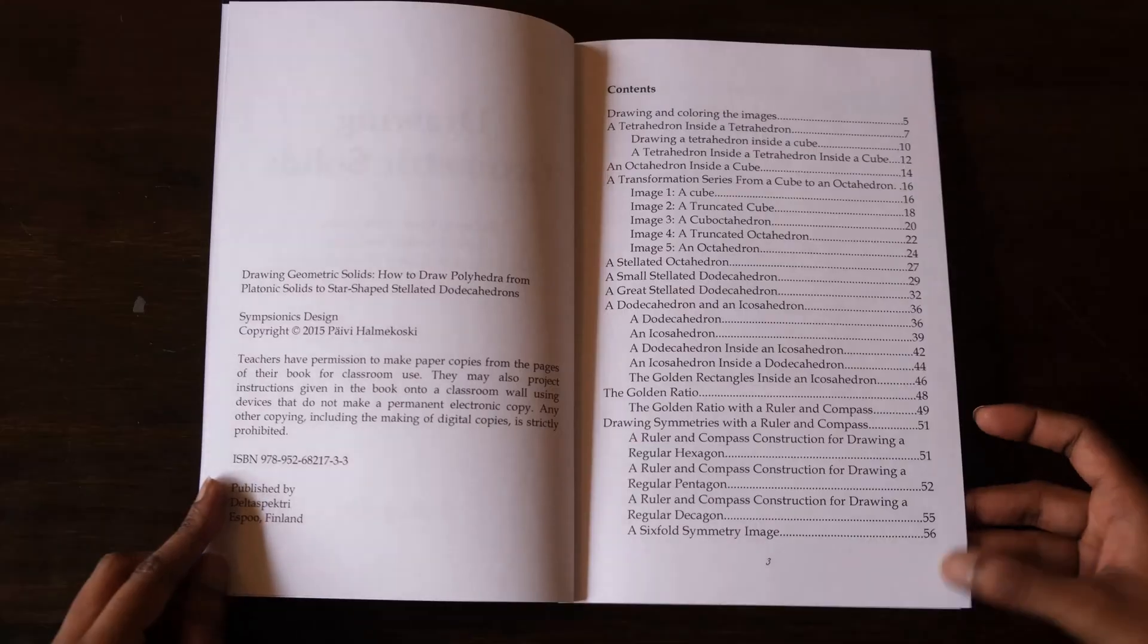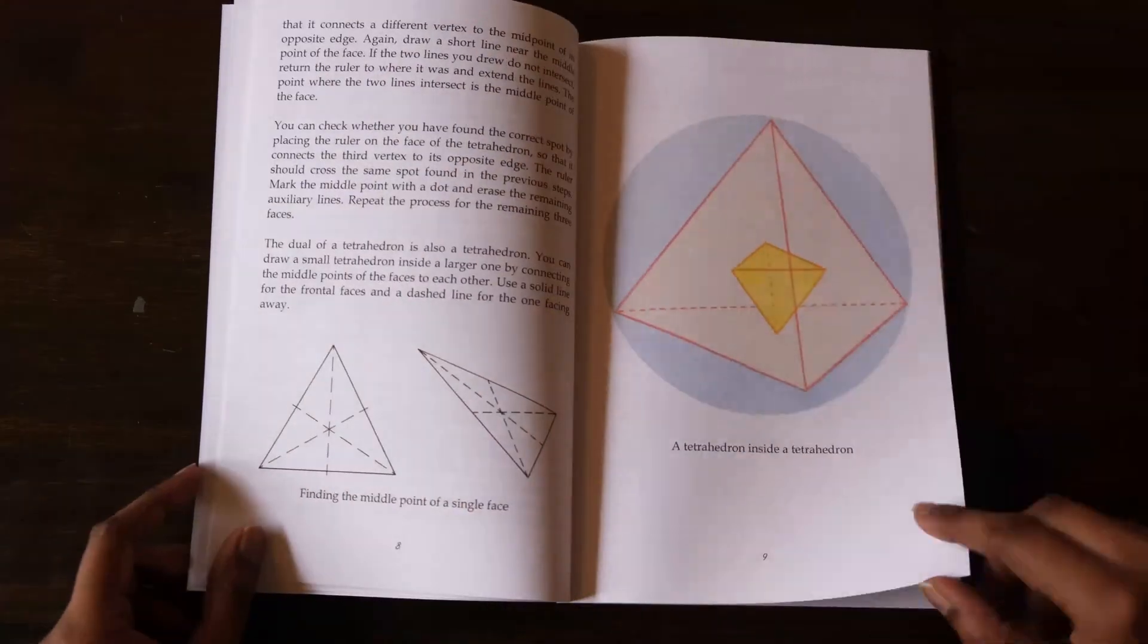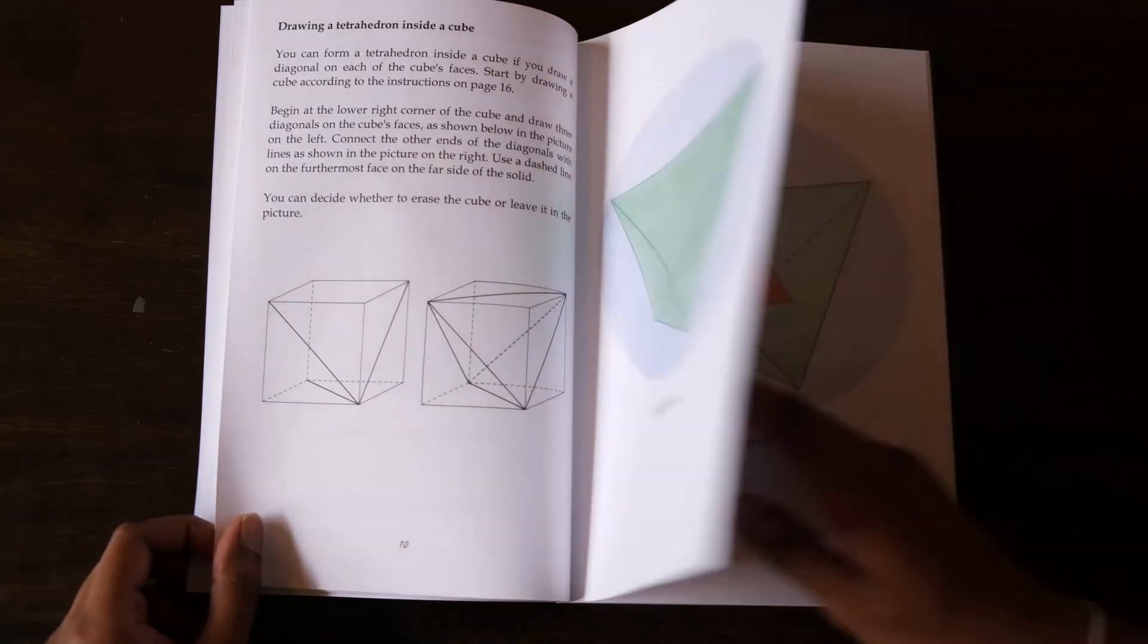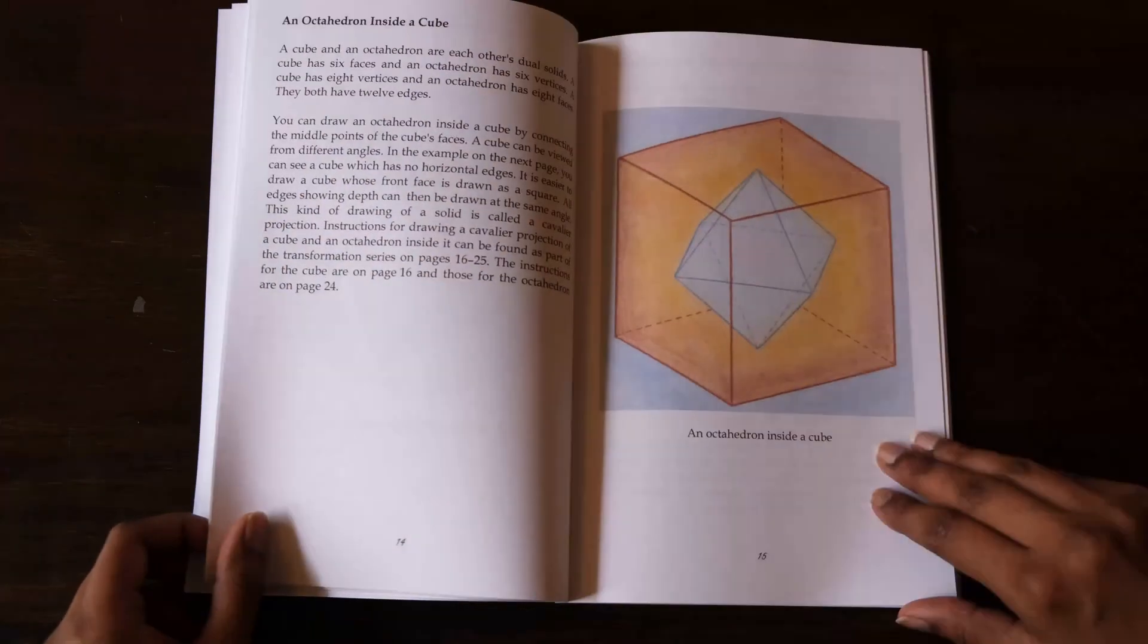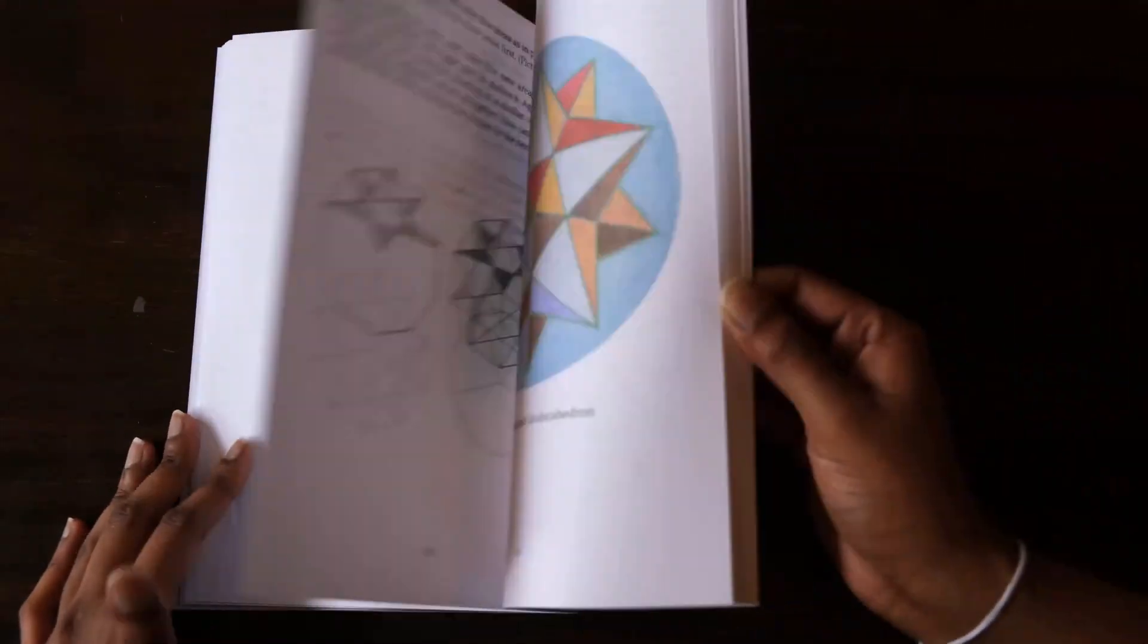This is a fantastic book for learning to draw a range of geometric solids. It gives you concise, step-by-step instructions with images for each shape, including a full color picture of the finished geometric solid.